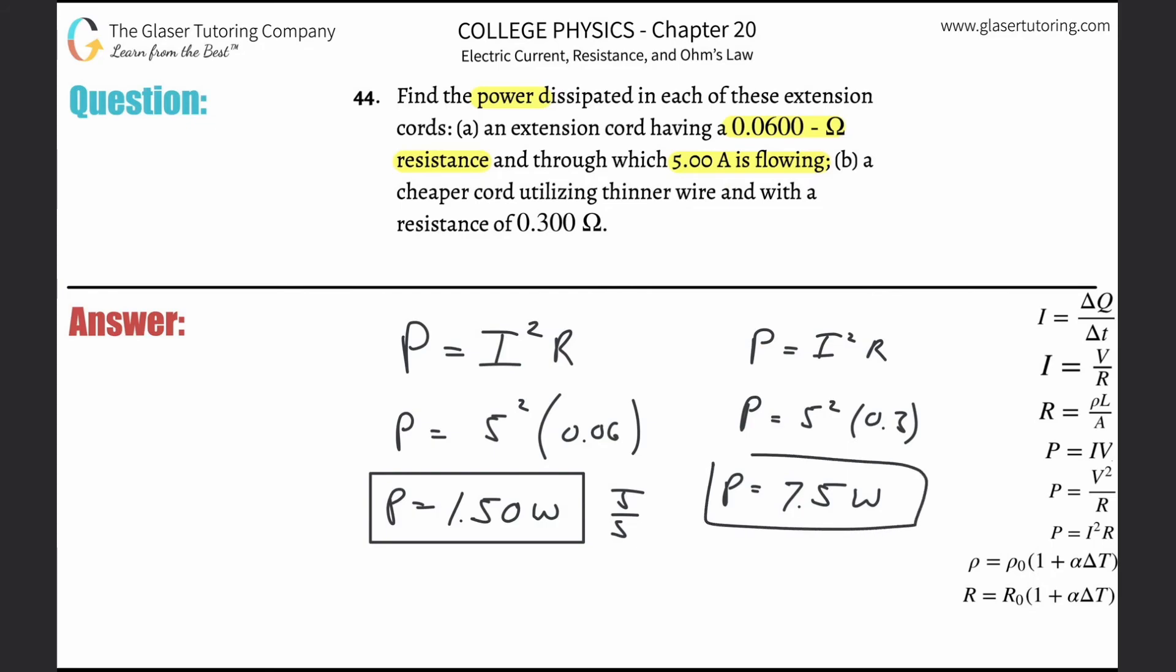This should make sense now. The resistance here was 0.06, the new resistance was 0.3. So if you take 0.3 and divide it by 0.06, there was a five times increase in the resistance.